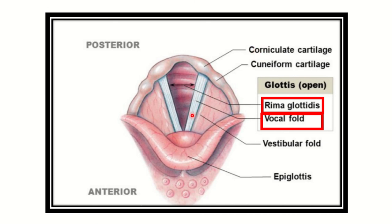Here we can see the vocal cords on both sides. The space between the vocal cords is known as the rima glottis. This is very important — the space through which air enters and exits is known as the rima glottis.